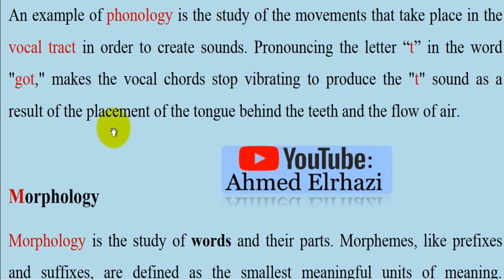This is a result of the placement of the tongue before the teeth and the flow of air. For example, pronouncing the letter T — reading the word 'got': got, got. The vibration of the tongue in 'got' is voiced.